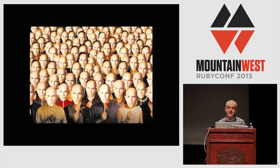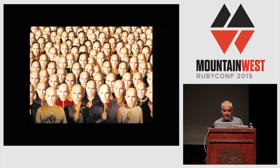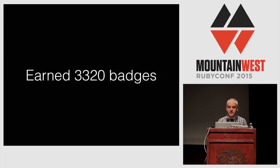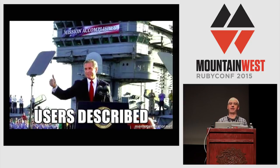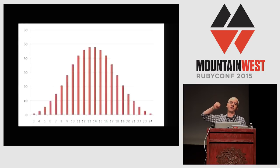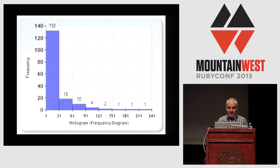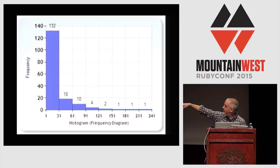Descriptive statistics are where we're starting, because you have a sea of users. I used to work in an education company that rhymes with C Mouse, and I was given a population of users to describe. There were 169 users with 3,320 badges, which means an average of about 20 badges earned per person. When I graphed it, it looked completely unexpected — 132 of the people got just one badge. Not the normal bell curve distribution I expected.